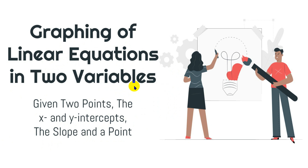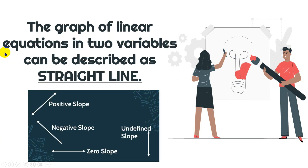So, what is the graph of a linear equation in two variables? The graph of linear equations in two variables can be described as a straight line. The graph of a linear equation is a straight line and it could be positive, negative, zero, or undefined slope. Remember: upward from left to right is positive slope, downward from left to right is negative slope, horizontal line is zero slope, and vertical line is undefined slope.